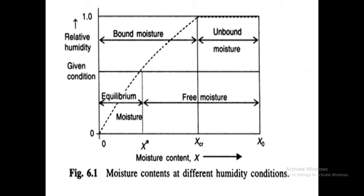x0 minus x star, that is equal to free moisture content. x0 is the initial moisture content. x star is the equilibrium moisture content. Difference between these two, free moisture content.